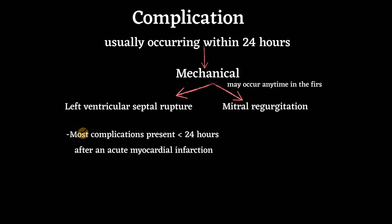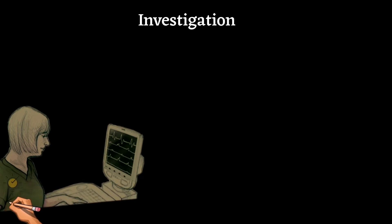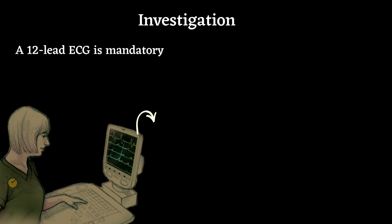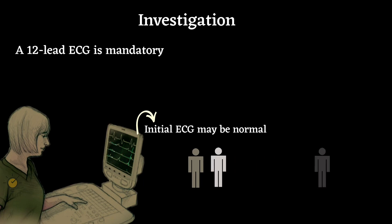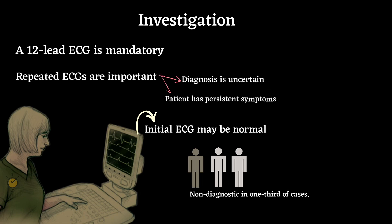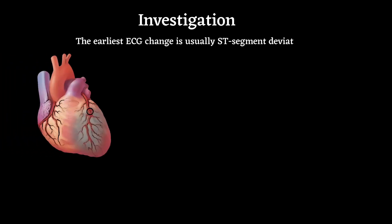Most complications present less than 24 hours after acute MI, but mechanical complications may occur anytime in the first week. Patients presenting with symptoms consistent with an acute coronary syndrome including MI require urgent evaluation. A 12-lead ECG is mandatory and is the most useful method of initial triage. The initial ECG may be normal or non-diagnostic in one-third of cases; repeated ECGs are important, especially where the diagnosis is uncertain or the patient has recurrent or persistent symptoms.